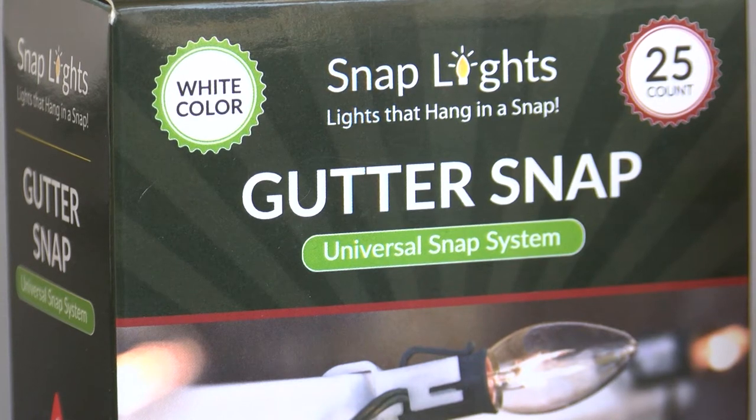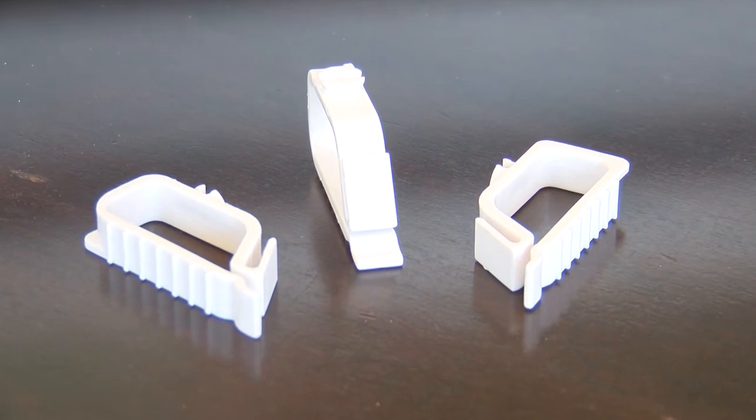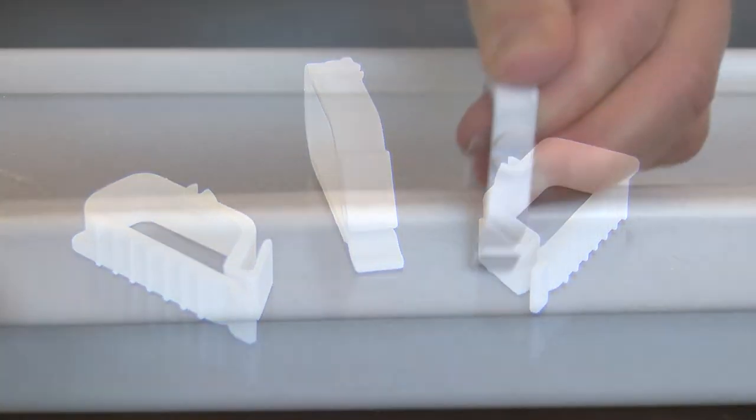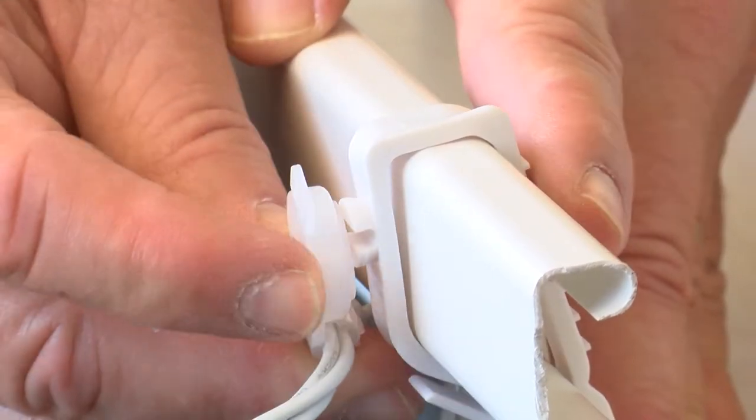The gutter snap is used to hang lights from your gutter or roof tiles. When hanging lights from your gutter, attach the gutter snap to your gutter with the snap facing forward. Use the zip or carriage snap to attach string lights to the gutter snap.